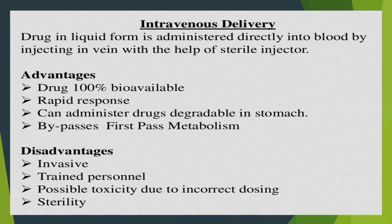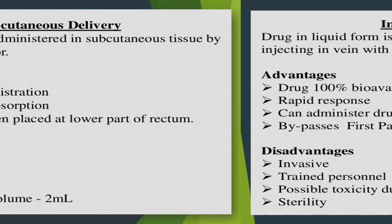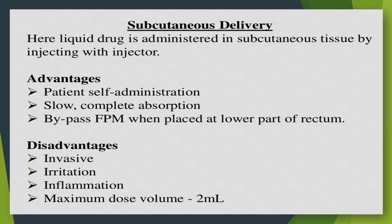For subcutaneous delivery, liquid drug is administered into subcutaneous tissue by injection. Advantages: patient self-administration, slow and complete absorption, and bypasses first pass metabolism when placed at the lower part of the rectum. Disadvantages: invasive, irritation and inflammation at the injection site, and maximum dose volume is two milliliters.